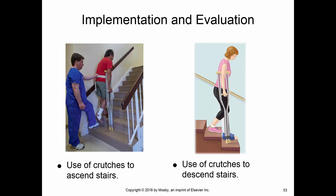We'll learn how to go up and down stairs with crutches in lab. Going up: put the crutch on the affected leg side, put weight on the crutch, step up with the good foot and pull yourself up, then bring the crutch up. Going down: put the crutch and bad leg down to the step first, then pull the good leg down. Always do this with a rail.